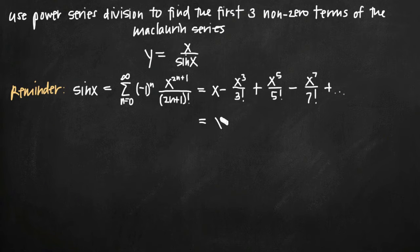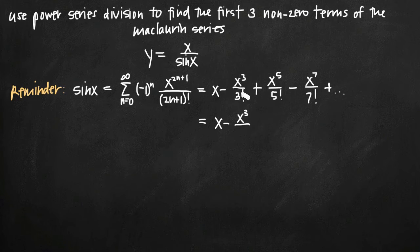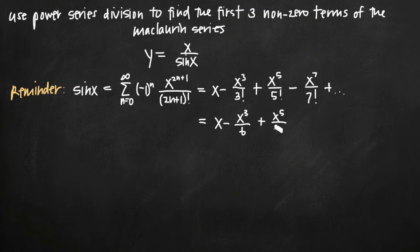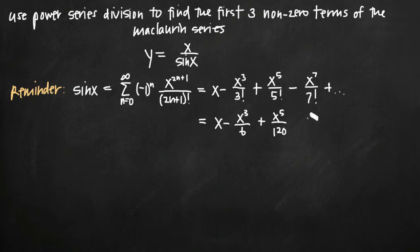We can simplify this by writing out the actual factorial values. So we have x minus x cubed over 6 — since 3 factorial is 6 — then plus x to the fifth divided by 5 factorial, which is 120. For now we'll leave it like that. If we end up needing the x to the seventh over 7 factorial term, we'll calculate that later as well.